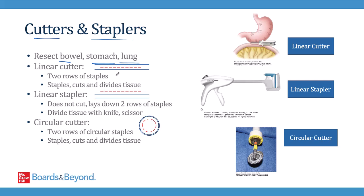These instruments are all referred to as staplers, but they work in slightly different mechanisms of action. The linear cutter fires two rows of staples and then cuts and divides the tissue in between those two rows. The linear stapler, on the other hand, doesn't cut — it instead just fires two rows of staples. The surgeon can then make a cut using a knife or a scissor in order to divide the tissue from the stapler.